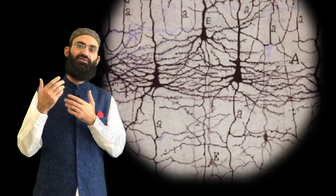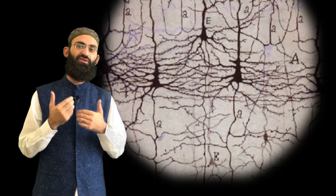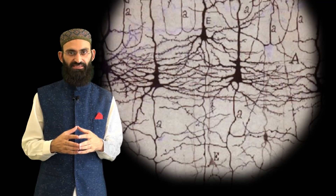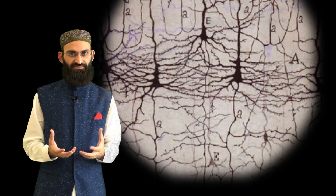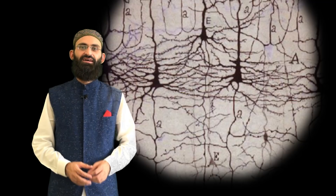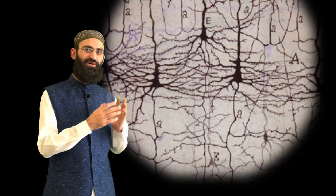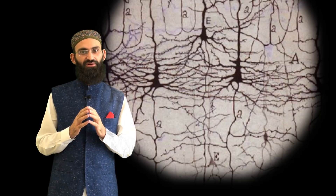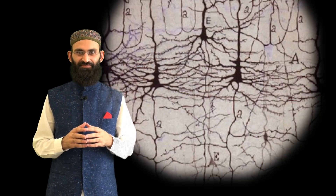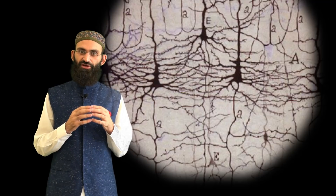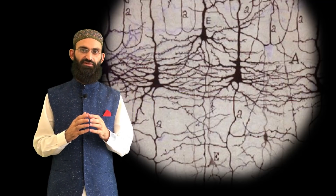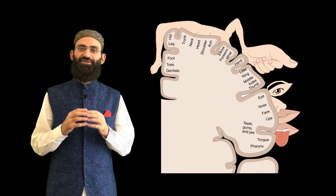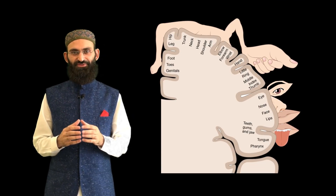These lower motor neurons in the brainstem or spinal cord in turn innervate skeletal muscles and cause their contraction. These pyramidal cells in layer five of the cerebral cortex are called upper motor neurons.